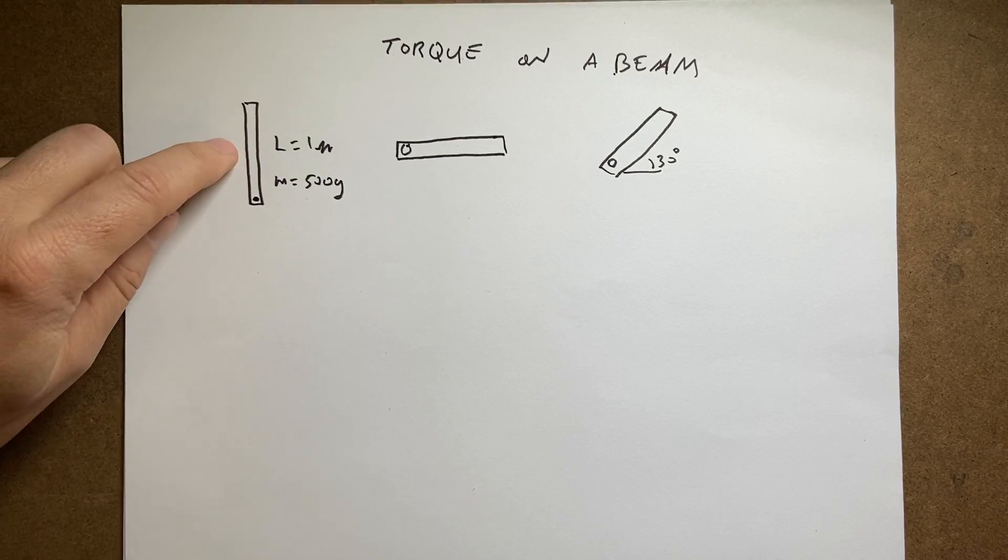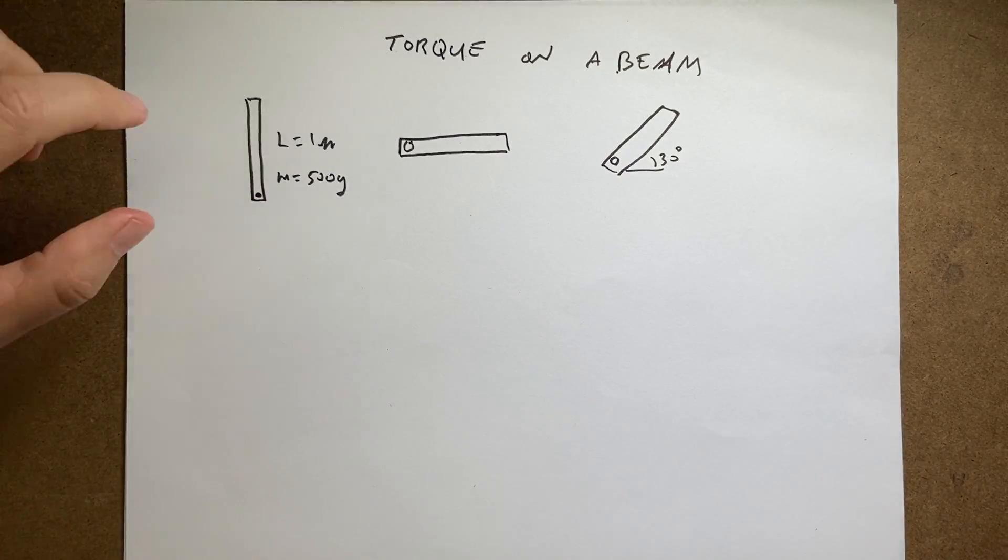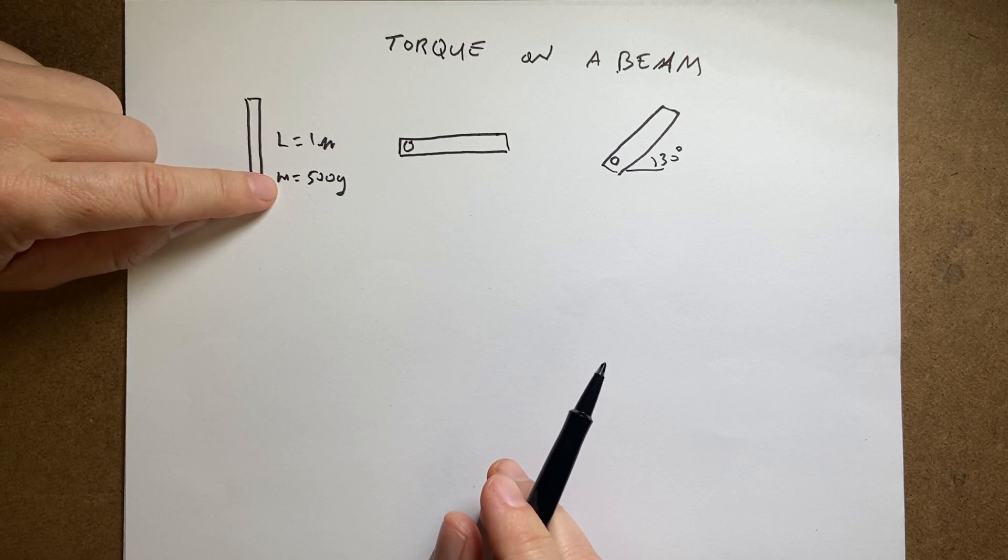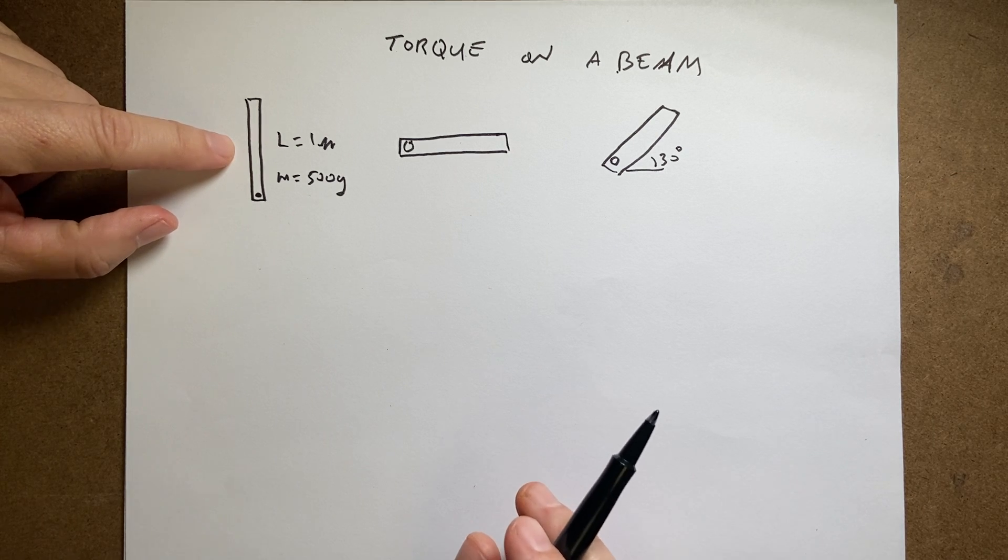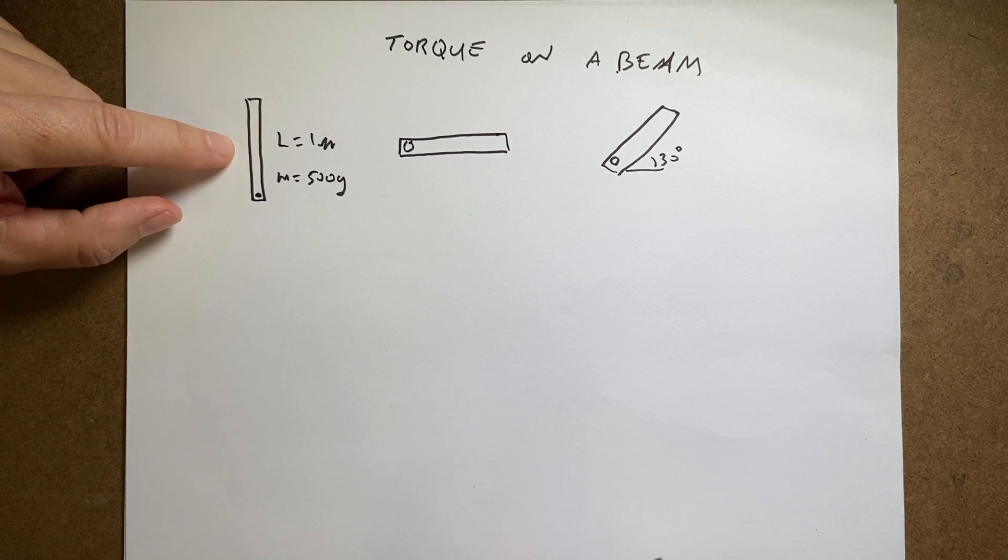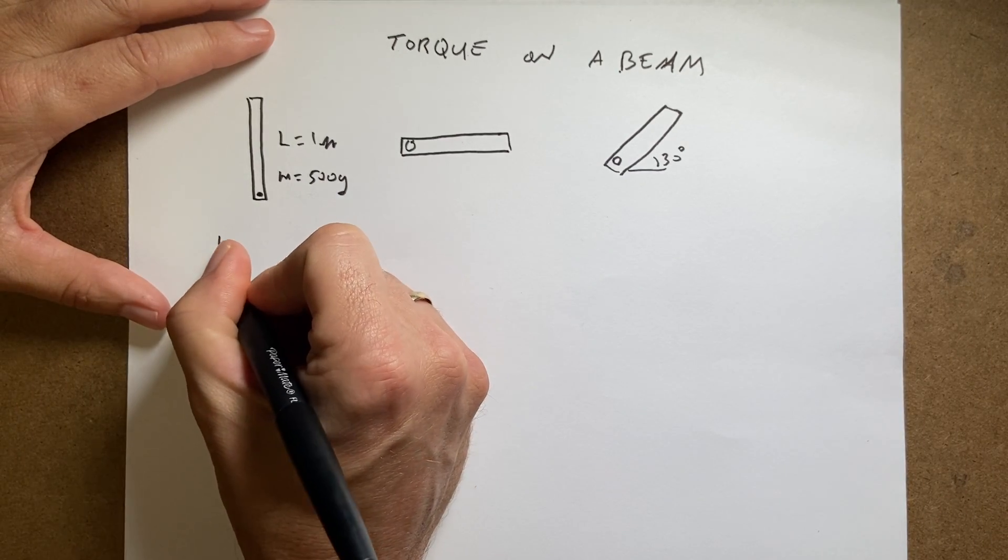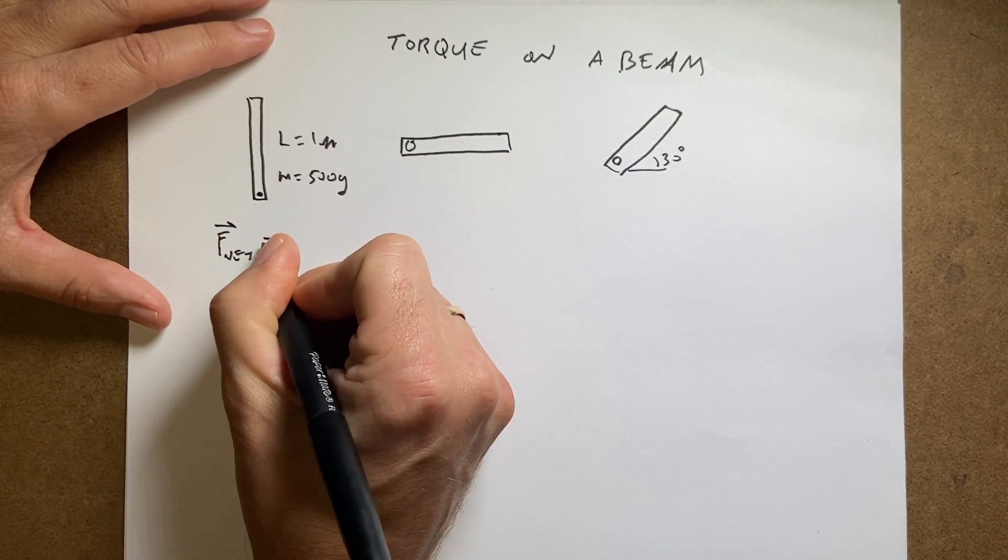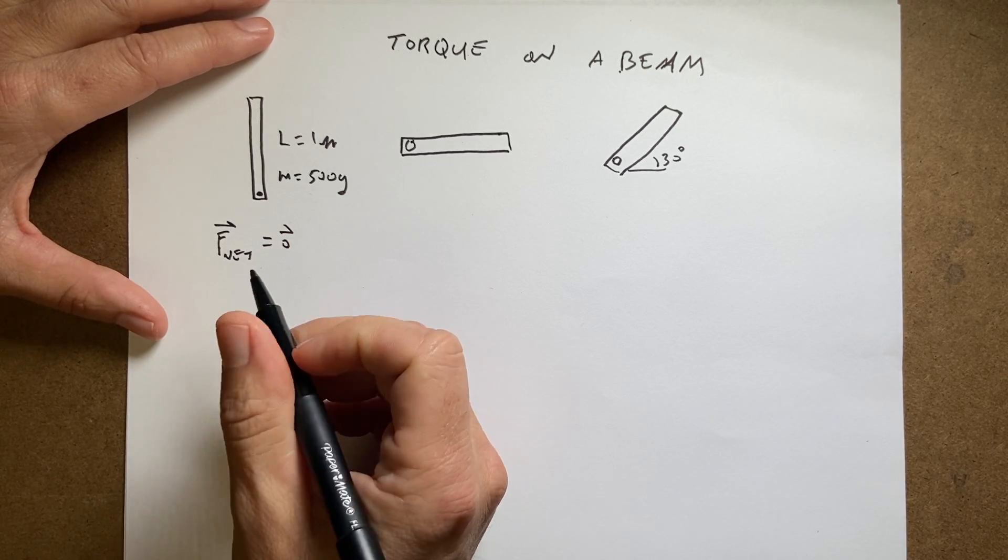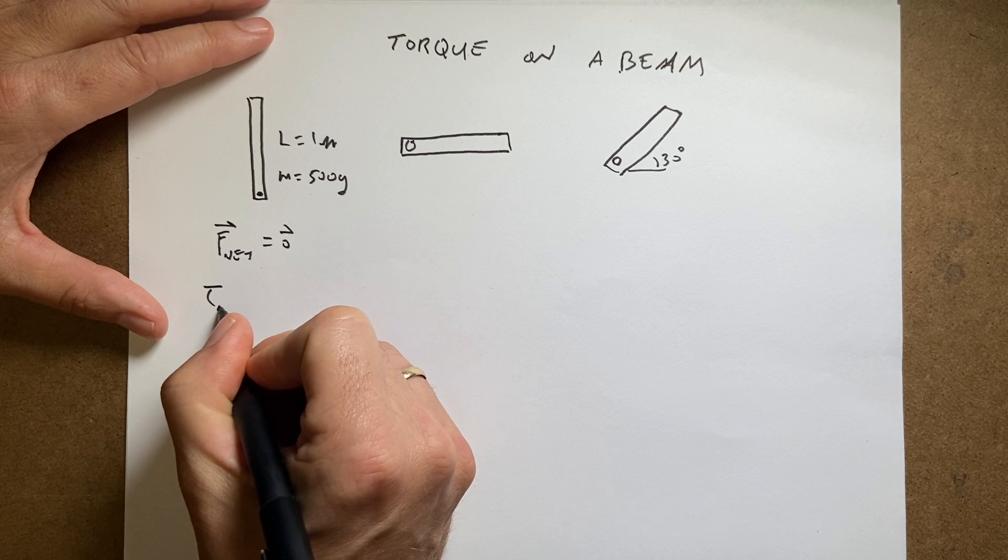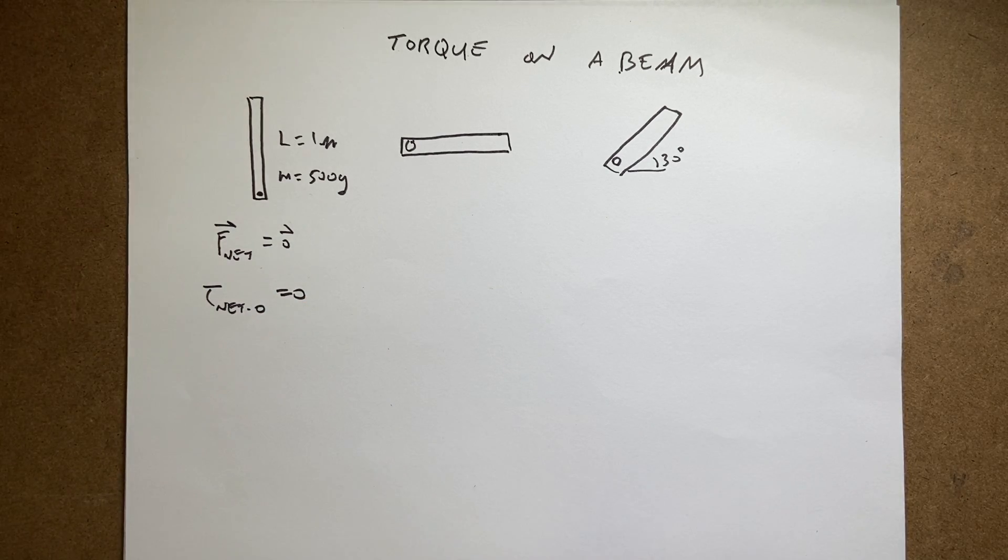So let's start right here. This is vertical, straight up and down. I picked a length of one meter and a mass of 500 grams just for fun. If this is in equilibrium, then the following must be true: for all equilibrium, F_net equals zero. The net forces have to add to zero. And I'm going to draw this as a scalar version: torque_net about some point is equal to zero.